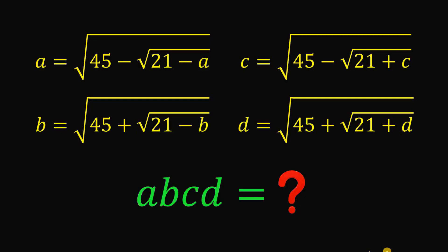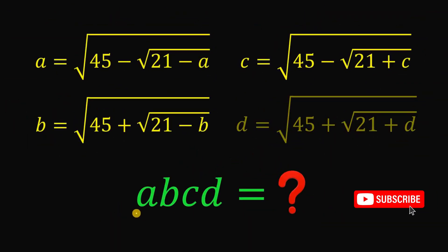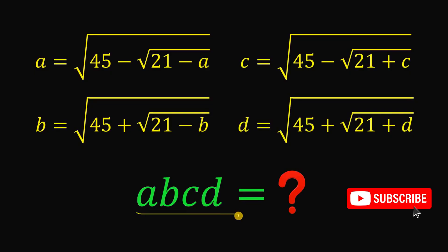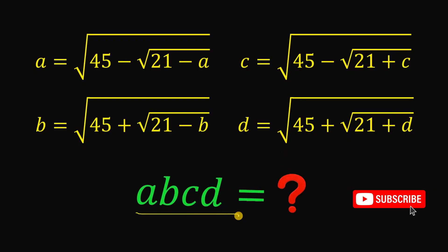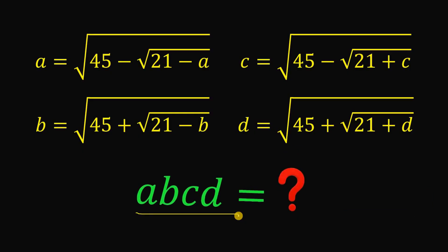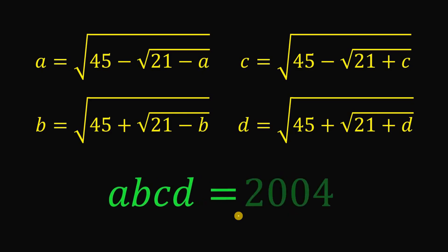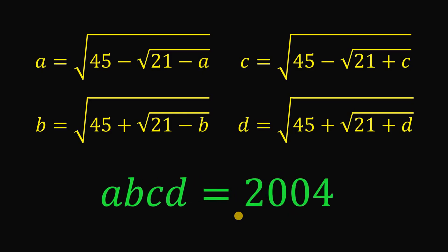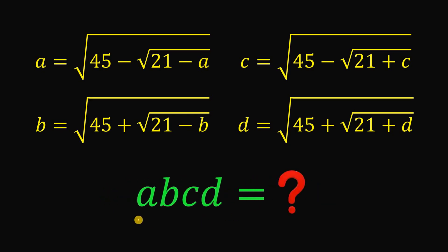Can you solve this algebra challenge? Given four equations, the goal is to find the numerical value of a times b times c times d. Pause this video and see if you can answer, because the solution will be shown in three, two, one. The answer to this question is 2004, and the real question is: how do we get 2004? Let's begin.